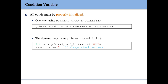For the dynamic way, we use the pthread_cond_init function. It takes two arguments: the first is a pointer to the condition variable we want to initialize, and the second is a pointer to an attribute structure. If you want to specify some attributes or behavior for the condition variable, you can specify those in the attribute structure and pass its address along with the condition variable into this function, which will then initialize the condition variable based on your specification.